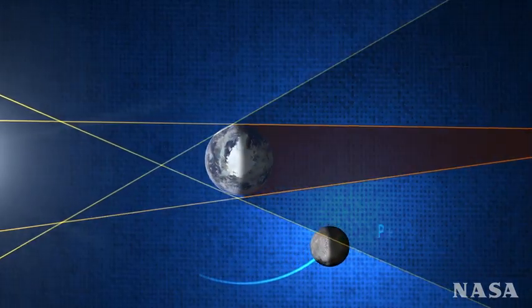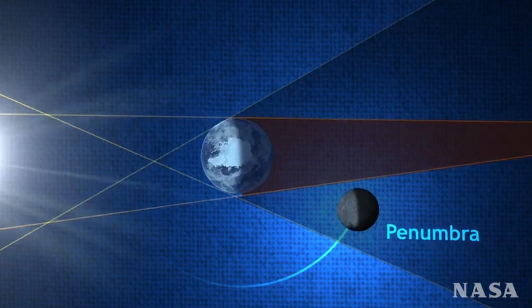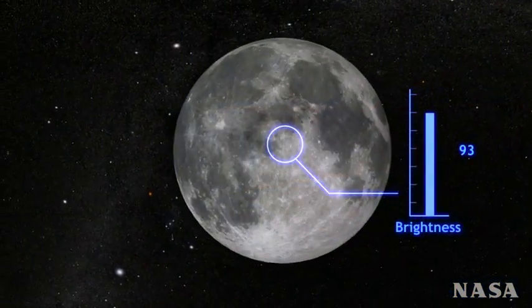First, the moon passes through what's called the penumbra, where the sun's light is only partially obscured. This results in only a slight darkening of the moon.